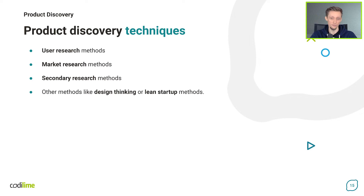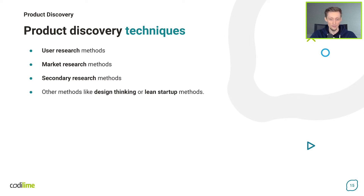Nothing can guarantee the success of your software product. However, some techniques can be extremely helpful in product discovery. There are many methods to choose from, depending on the project. While planning the activities, things you should include are: user research methods — studying user problems, needs and behaviors through surveys, interviews and focus groups; market research methods — gathering information about potential end users and their preferences; secondary research methods — gathering information that already exists in books, reports, papers and databases; and other methods like design thinking or lean startup methods.